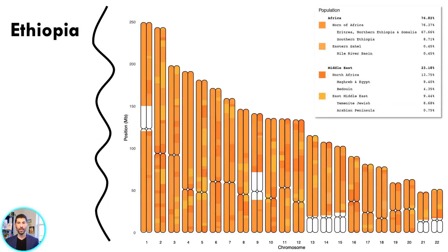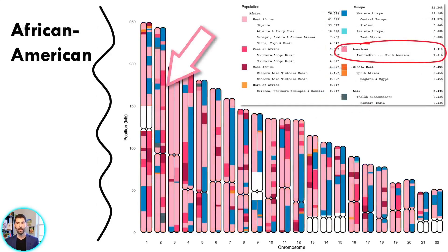Here's someone from Ethiopia — mostly Horn of Africa or East African populations, but some North African and some Arabian influence due to recent admixture between those two regions. If you're African American, you may well have one or two percent of Native American DNA — before, you might have gotten less than 1% summarized as a result. Now you can actually locate those segments, like the one shown here in darker pink, and this could help you identify and locate it for genealogical purposes.